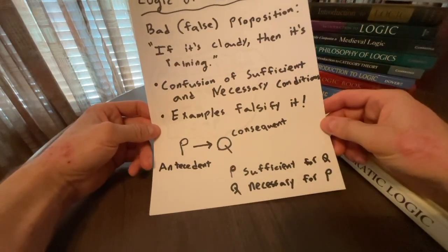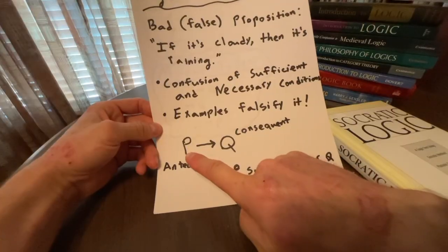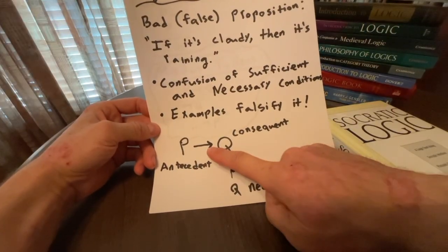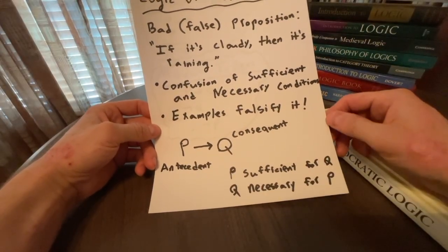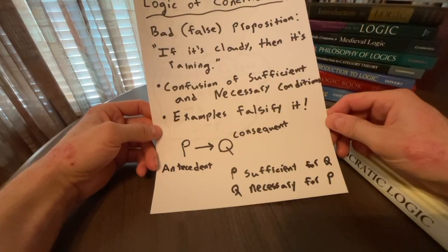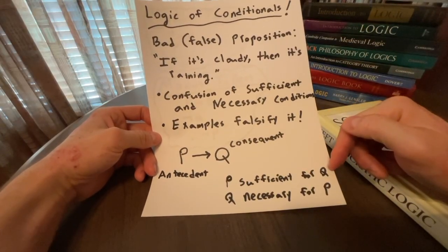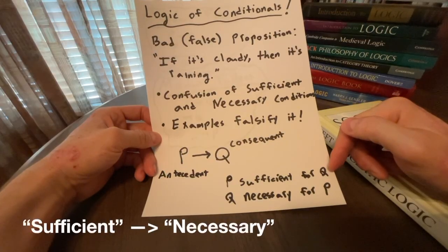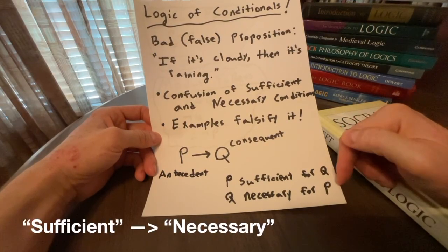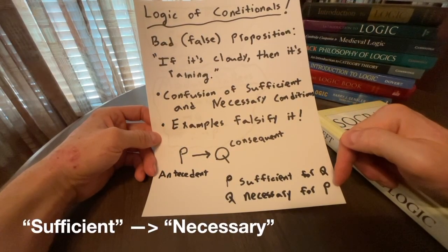So symbolically, we represent this as P arrow Q. So the arrow is the conditional, the if-then. So if P, then Q. So P is called the antecedent, and Q is called the consequent. And when we're thinking about the sufficient and necessary condition, note that the antecedent is sufficient for the consequent, and the consequent is necessary for the antecedent.